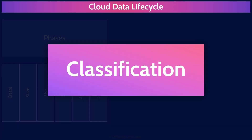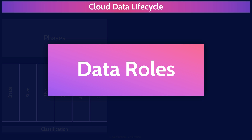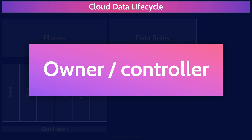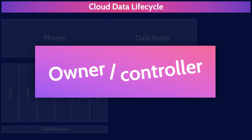Classification is super important — data needs to be properly classified when it's created. Now let's move on to another important topic related to data protection: Roles. Who is accountable and who is responsible for what? Starting with the data owner, also called the data controller — these terms are used interchangeably. It's very important that the data owner is accountable for the protection of data. Accountability can never be delegated. The data owner sets the requirements for protecting the data, and can then delegate various responsibilities to the following roles.